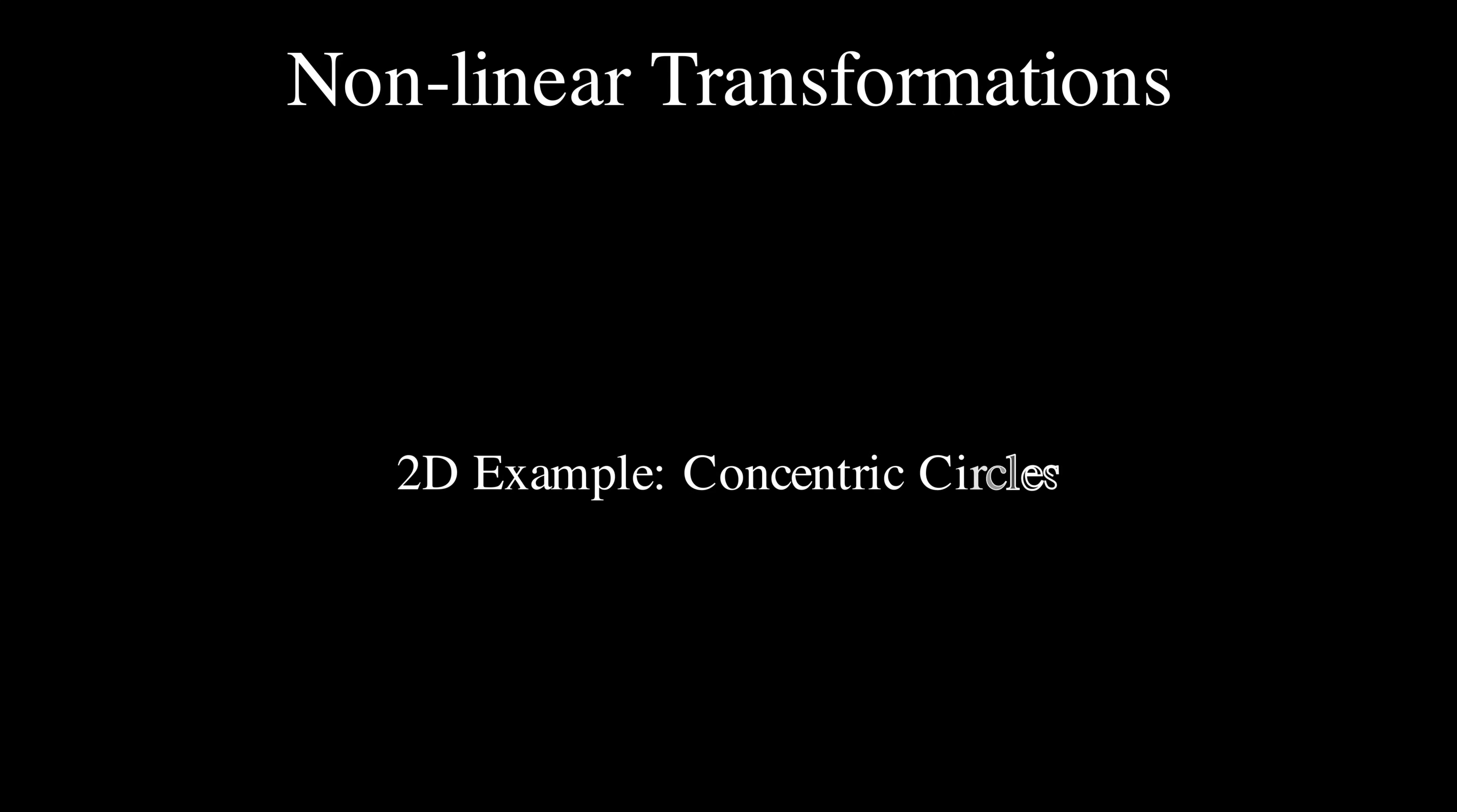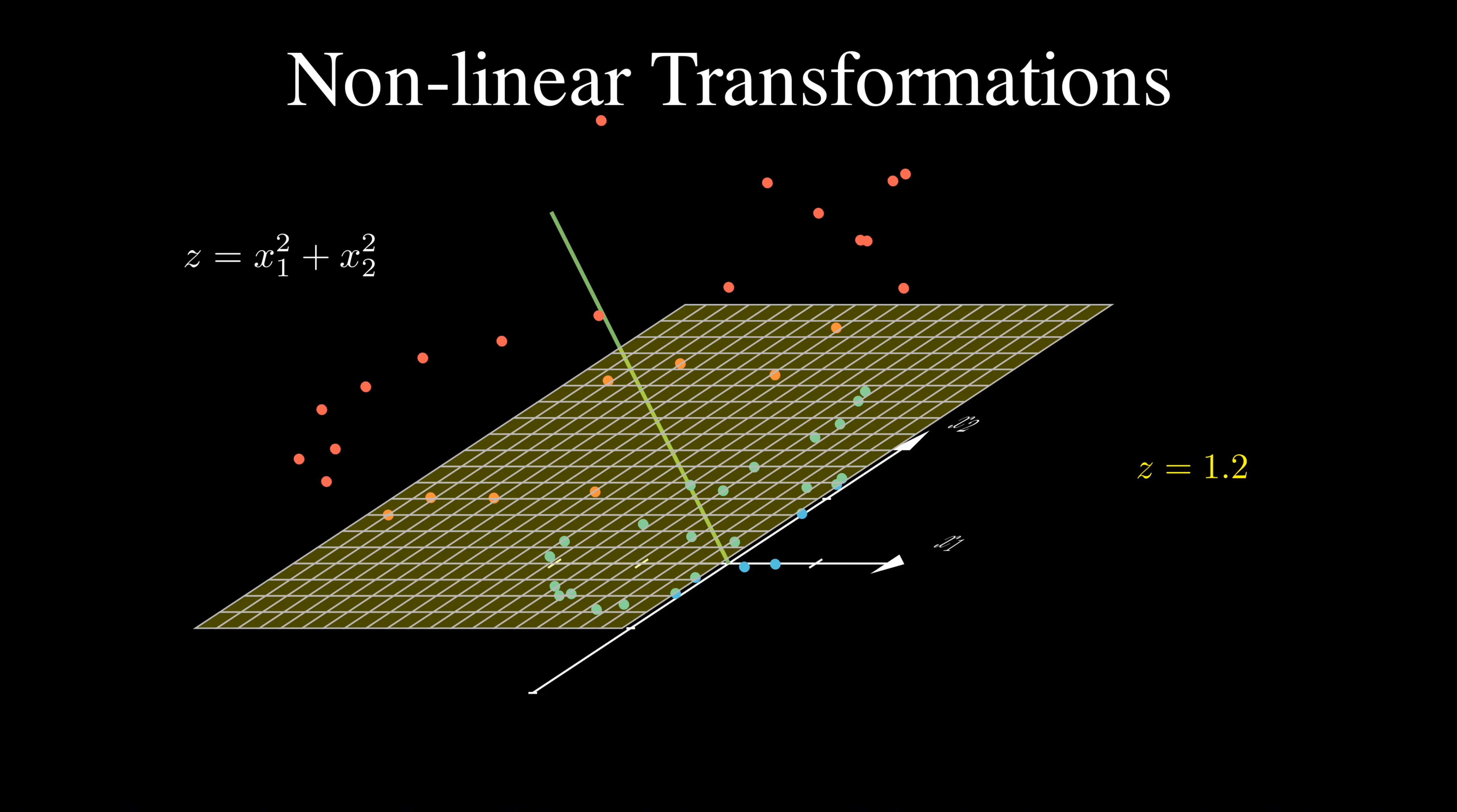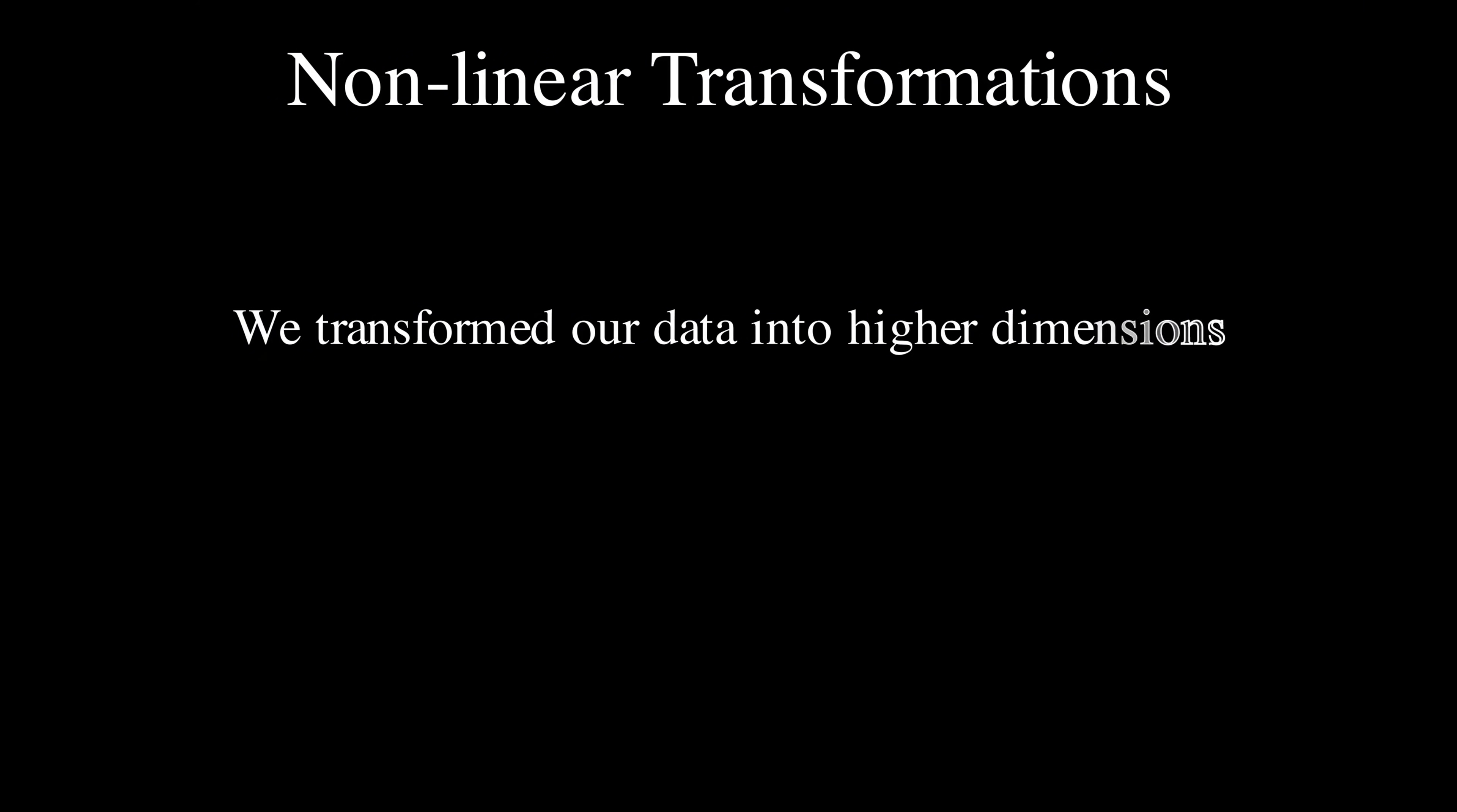Let's look at an even more complex example in 2D. Here we have data arranged in concentric circles. The inner circle is one class and the outer ring is another class. There is clearly no straight line that can separate these classes. But if we transform our data by adding a third dimension z, where z = x² + y², something magical happens. The outer ring gets lifted higher than the inner circle, and now we can separate the classes with a horizontal plane. This is the power of transforming our data to a higher dimension, where it becomes linearly separable.